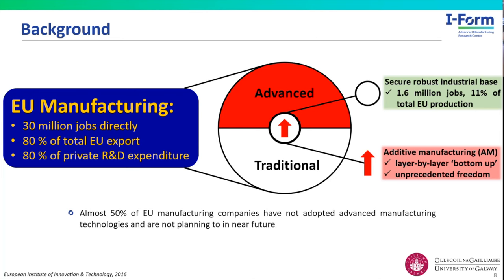Moving on to the research aspect: the background is manufacturing. Within the EU, manufacturing directly accounts for 30 million jobs and 80% of total EU exports — it's really important. Particularly important is the transition from traditional to advanced manufacturing. Surprisingly, a survey found that 50% of EU manufacturing companies had not adopted advanced manufacturing technologies and had no plans to do so, which is a big challenge in encouraging industry to adopt these technologies.